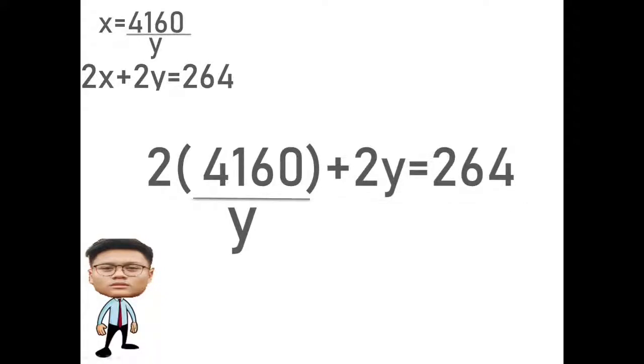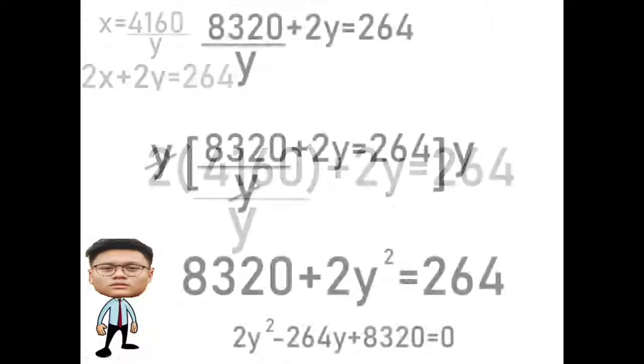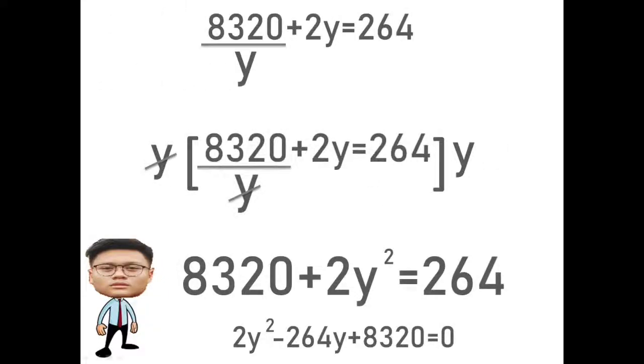After we simplify that equation we will now have 8320/y plus 2y equals 264. We will now multiply it by y. The outcome will be 8320 plus 2y squared equals 264y.